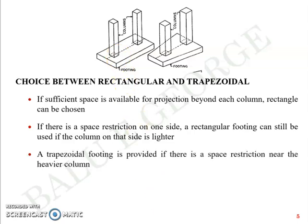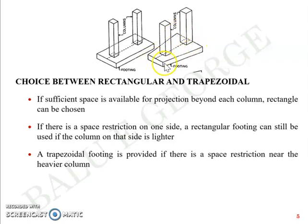The trapezoidal footing is resorted to if the space restriction exists near the heavier column. As you can see in this picture, there is a heavy column with a space limitation to project the slab toward the property line. In such cases you go for a trapezoidal footing where the breadth at the heavier column end is increased compared to the lighter column end. The heavier column distributes load to a larger area and the lighter column to a smaller area, balancing each other in terms of stress — load divided by area. These parameters govern the choice of rectangular or trapezoidal footing.